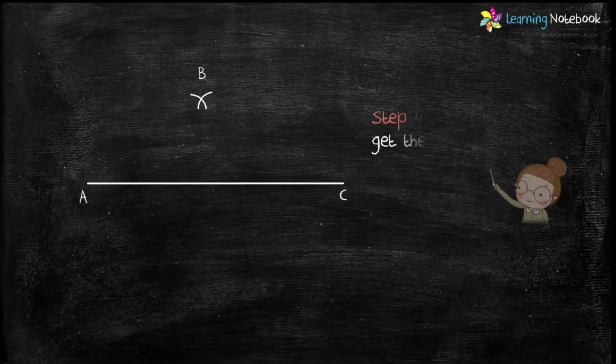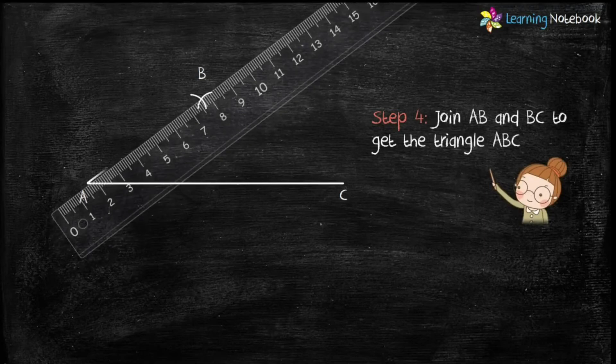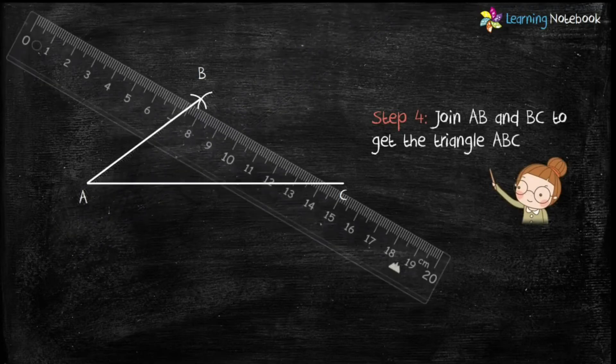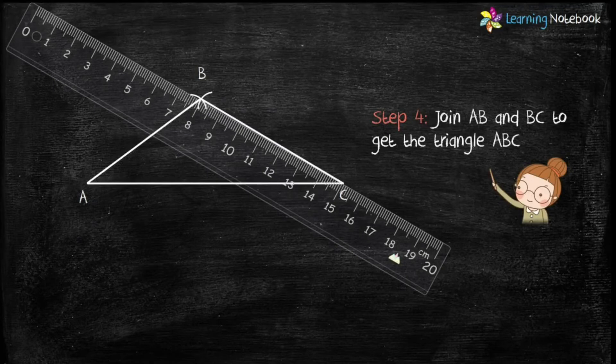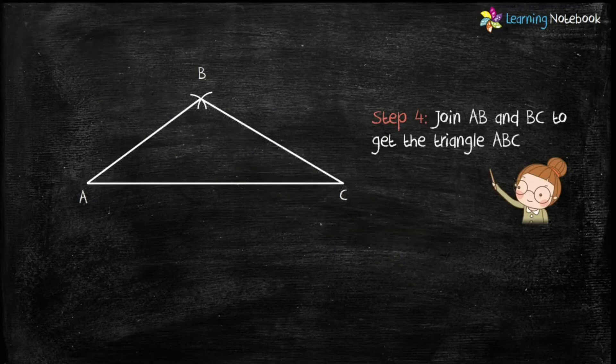In step 4, now join AB and BC to get the triangle ABC. Now students, mark the length of these sides.